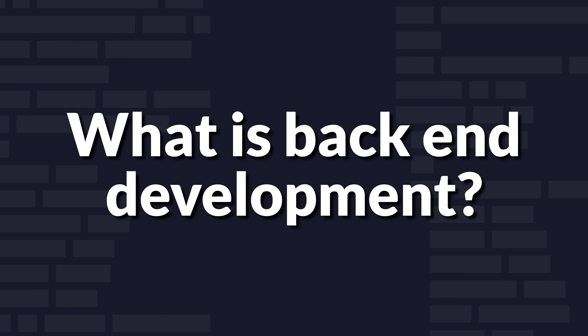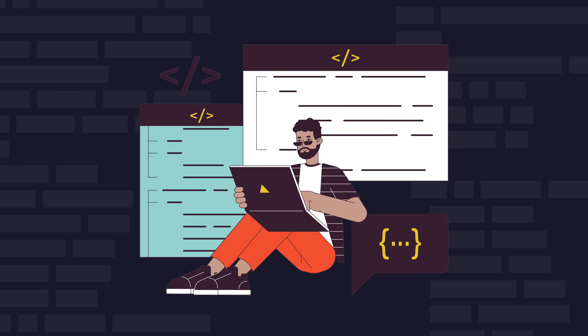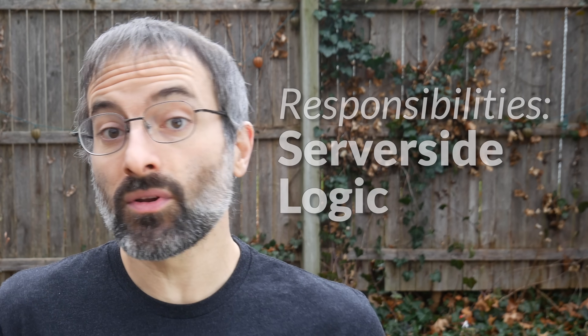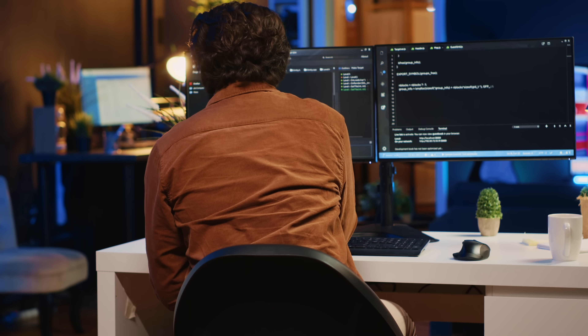So let's start by defining what back-end development is. A back-end developer is a type of programmer who focuses on creating the underlying logic and server-side software that powers websites and applications. Their primary responsibilities include server-side logic — they write code that runs on web servers, handles the business logic of an application, processes user requests, interacts with databases, and controls the flow of data between the server and the front end.